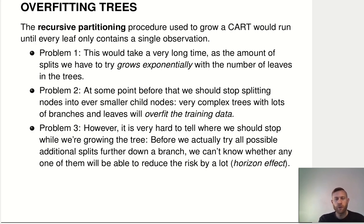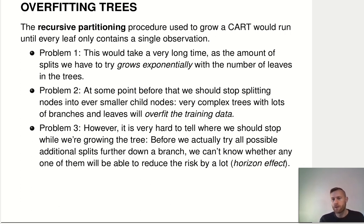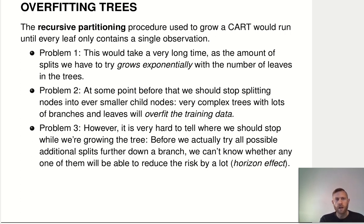This recursive partitioning procedure that we use to grow a classification and regression tree — in every node we do this greedy optimization and exhaustive search over all features and all possible split points to find the one split that gives us an optimal result in terms of impurity reduction or empirical risk minimization. This recursive partitioning, where we split every node into ever smaller sub-nodes, would run until basically our tree has one leaf for every observation.